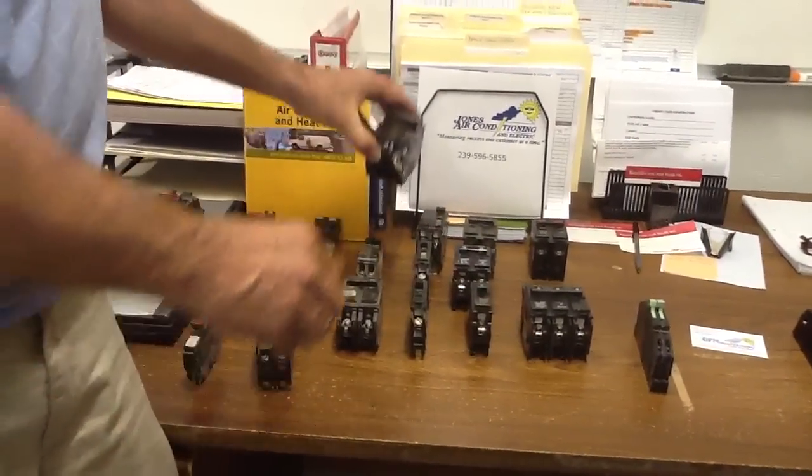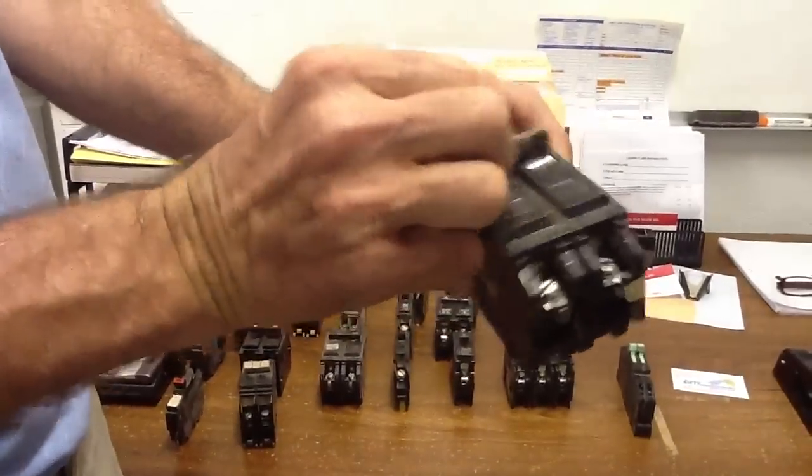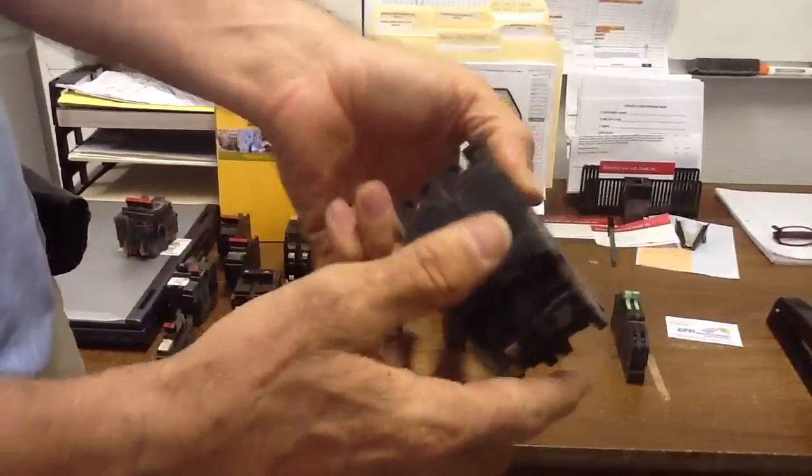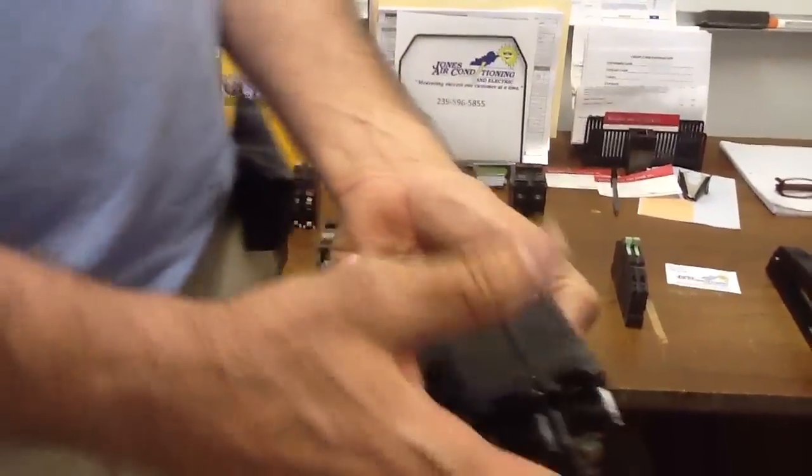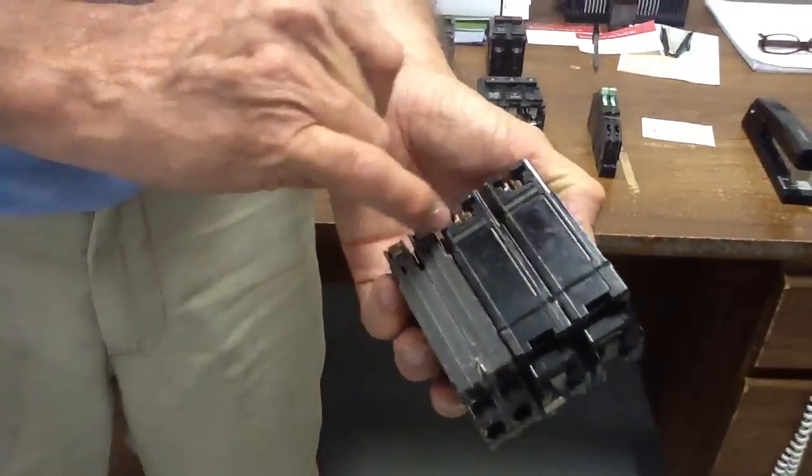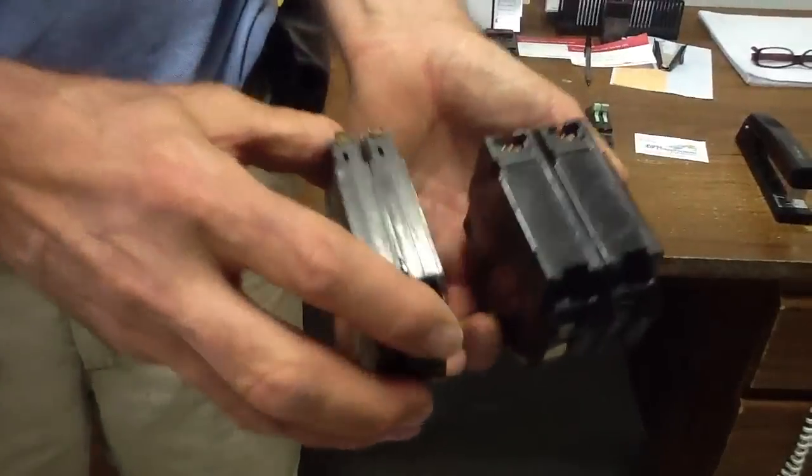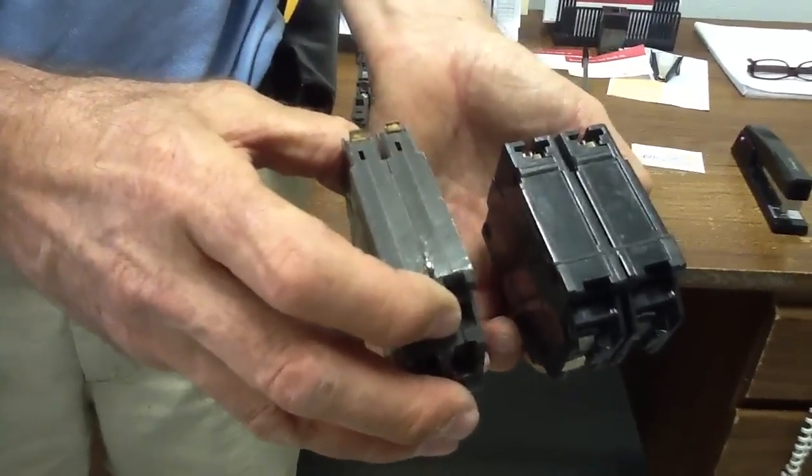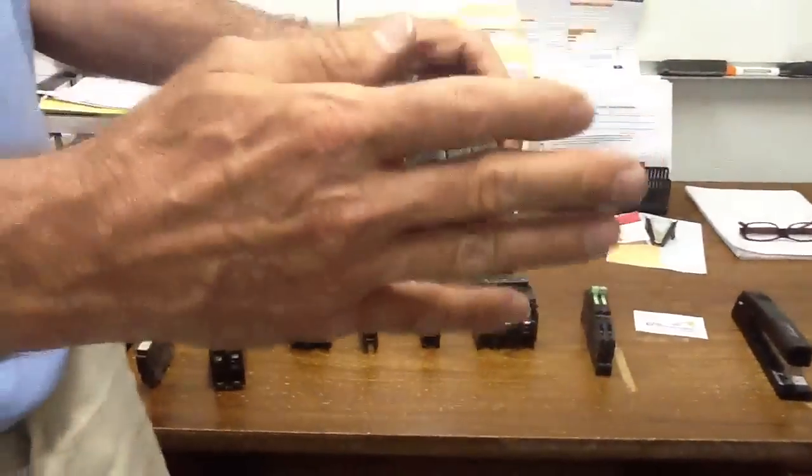This next one is a General Electric breaker, double pole. There's the footprint. Here is the thin General Electric. If you look at the stab locks, they're pretty close in size, but one's horizontal and one's vertical stab. The thin one is what I'll say is the horizontal, and the vertical is the fat one. They will not interchange with no one, which is what we want.